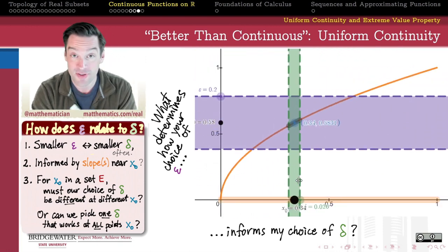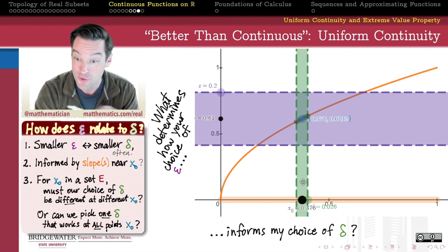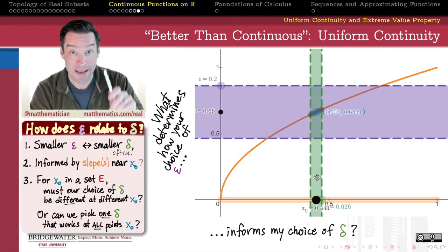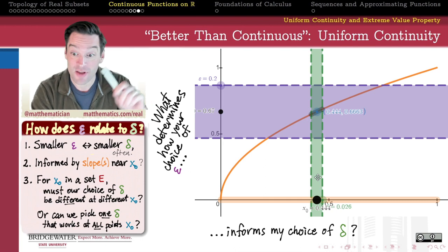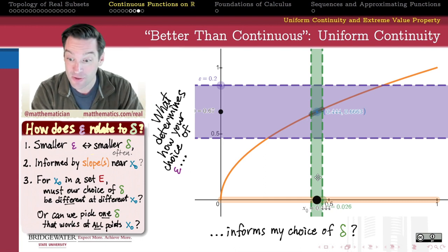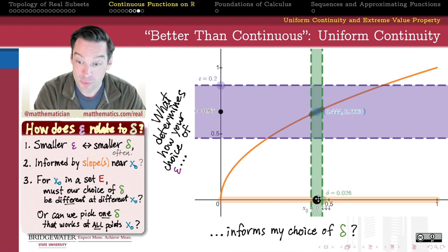And that smaller value of delta will still also work for all of the values in this strip. But the point is you don't have to tell me x0 in order to determine delta. I don't need to know where I am in the domain of my function to determine how to pick a delta in relation to epsilon. You only have to tell me epsilon and I can give you a single delta that works for all points in my domain.